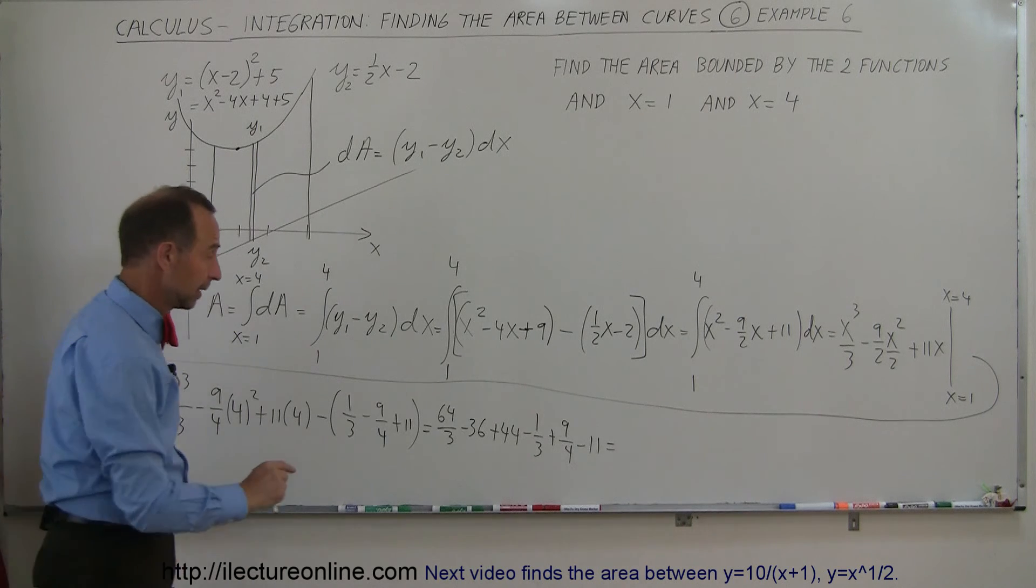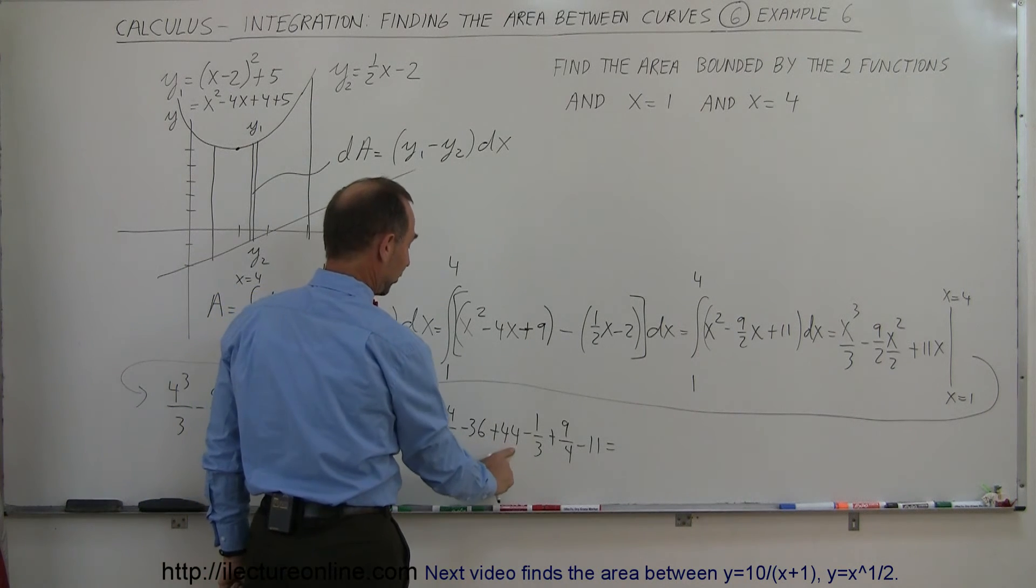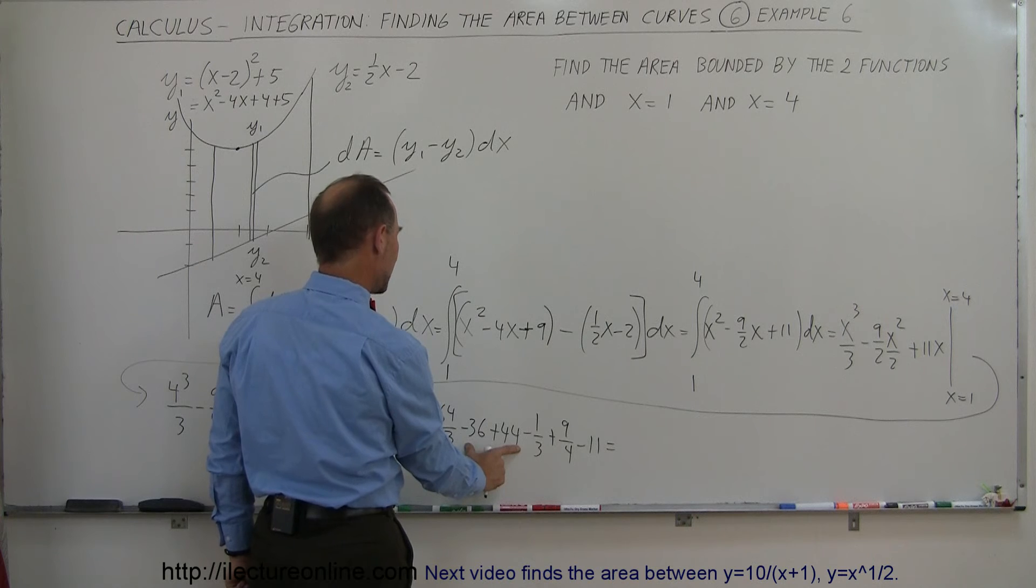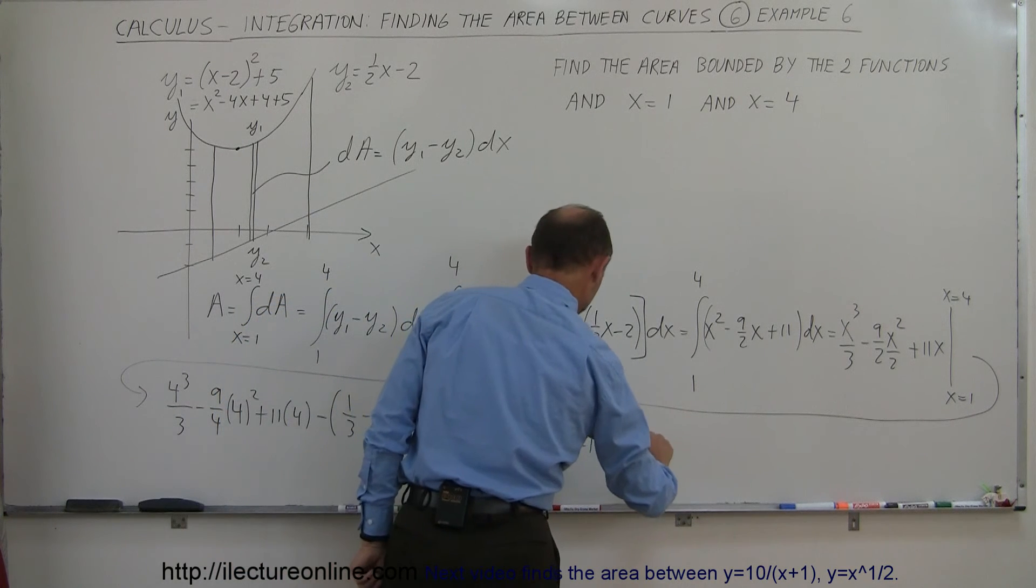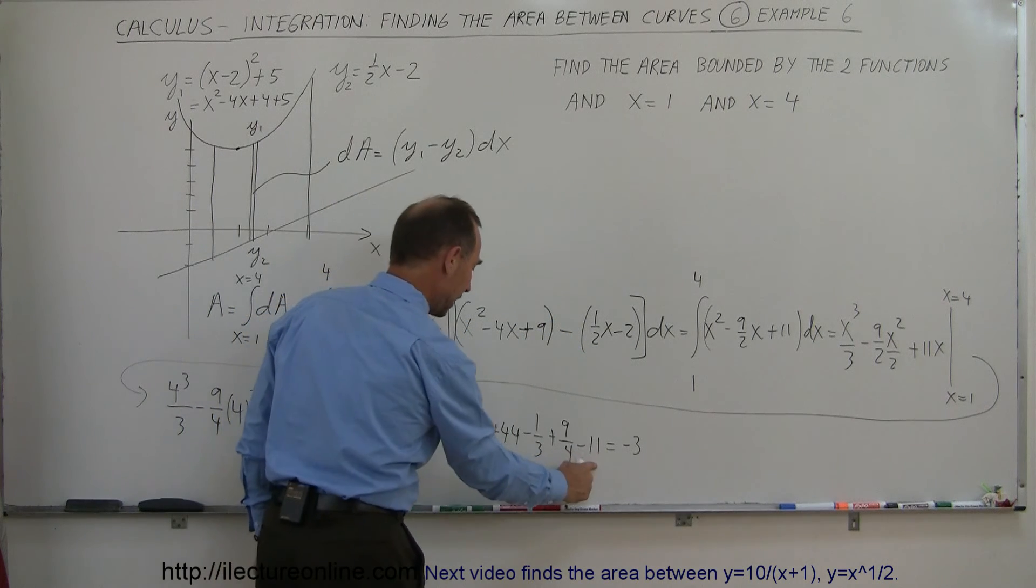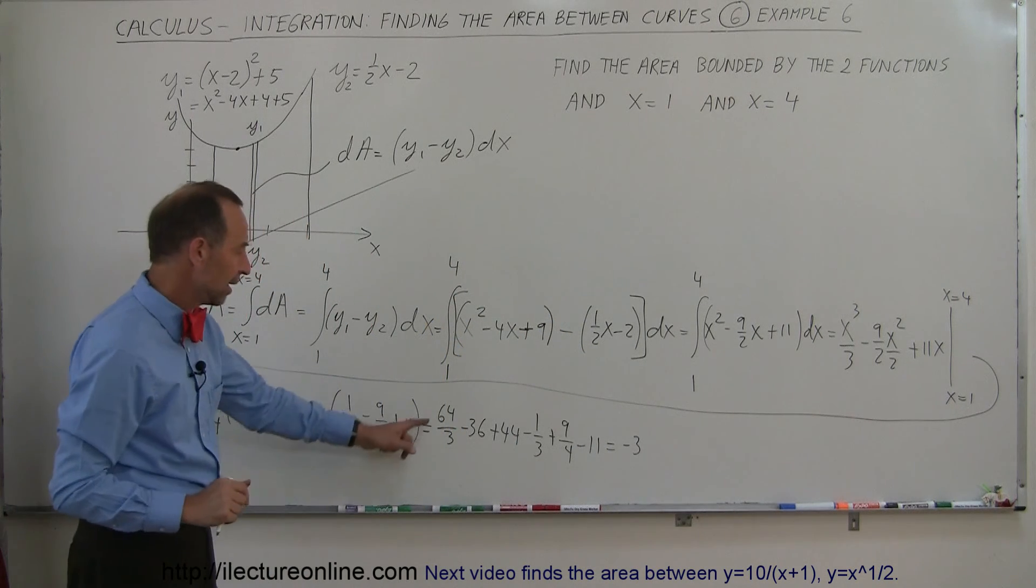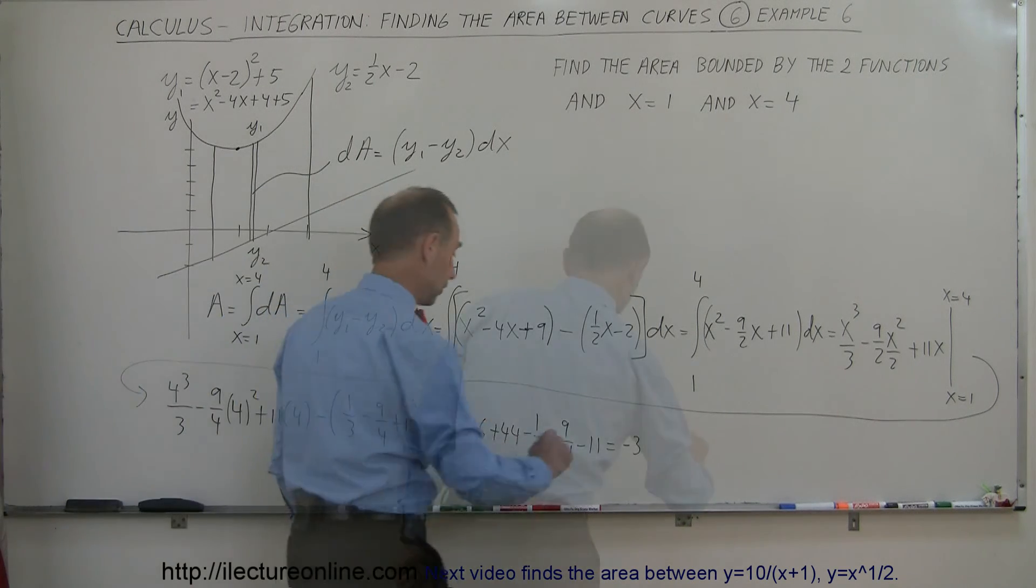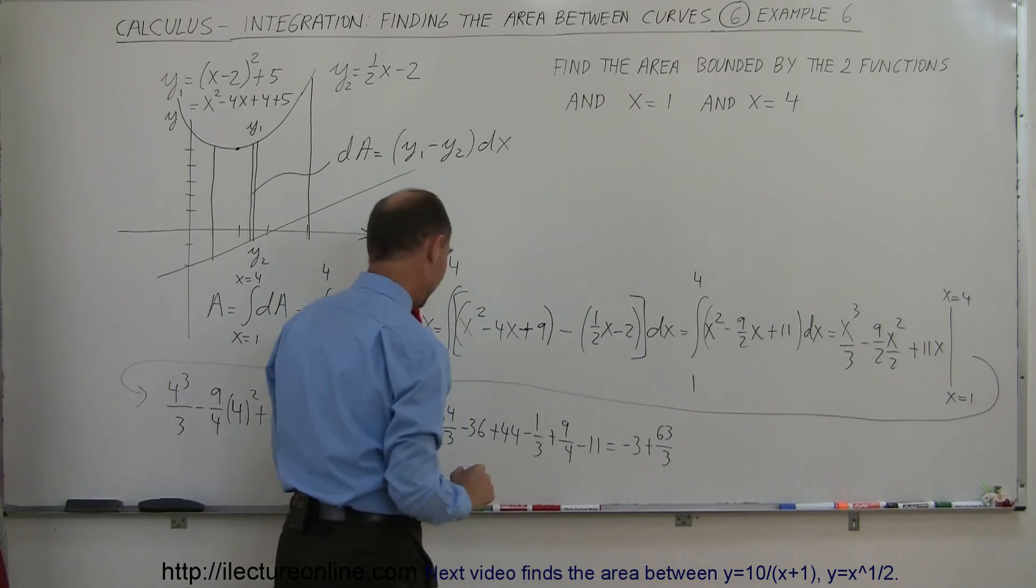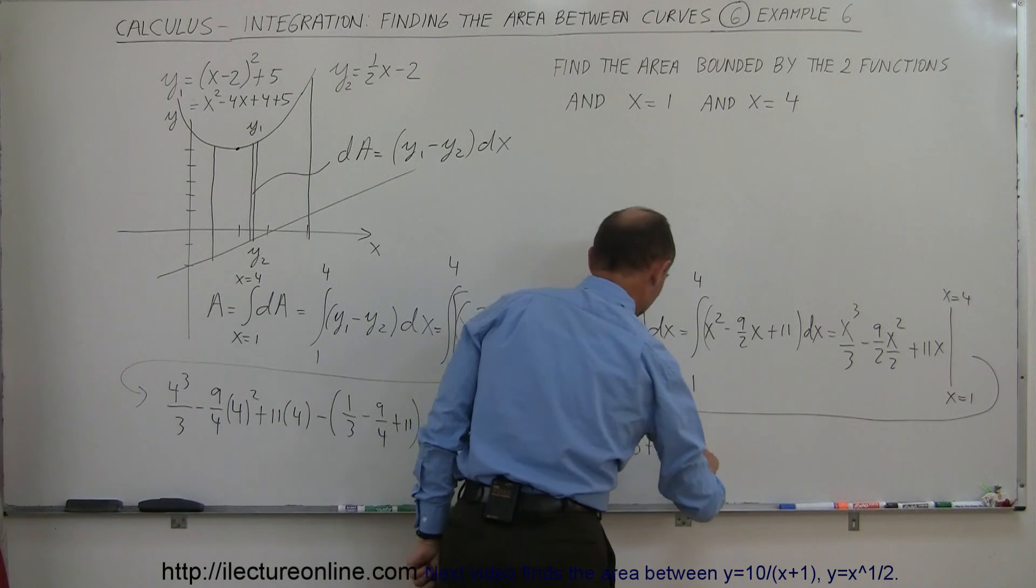All right, continuing. Minus 36 plus 44 that will give me a plus 8, minus 11 that gives me minus 3. So again that's 8 minus 11, that's minus 3. 64 thirds minus 1 third is 63 thirds, and I have left another plus 9 fourths.